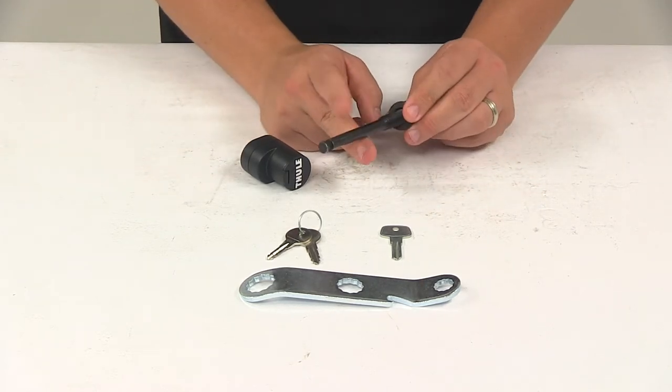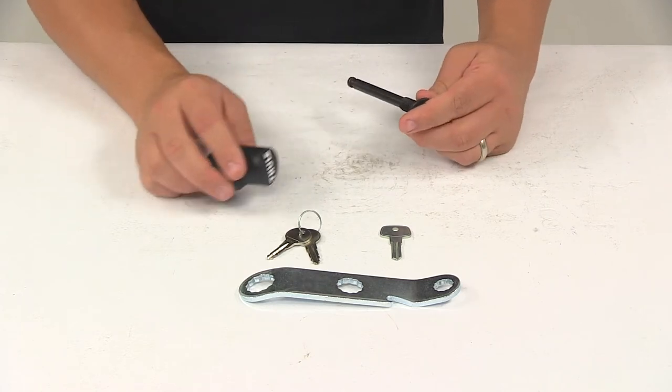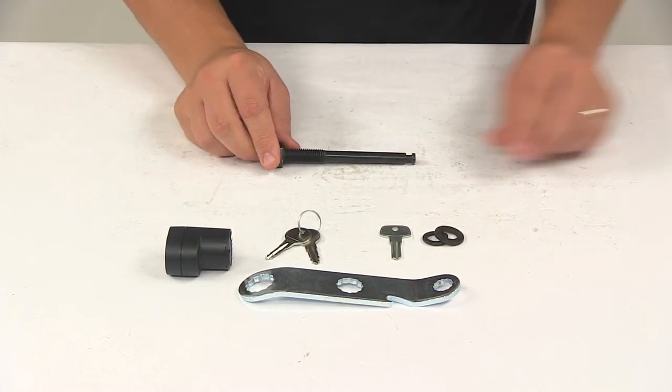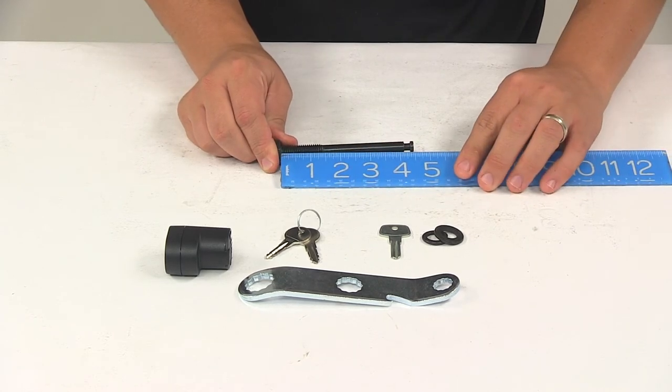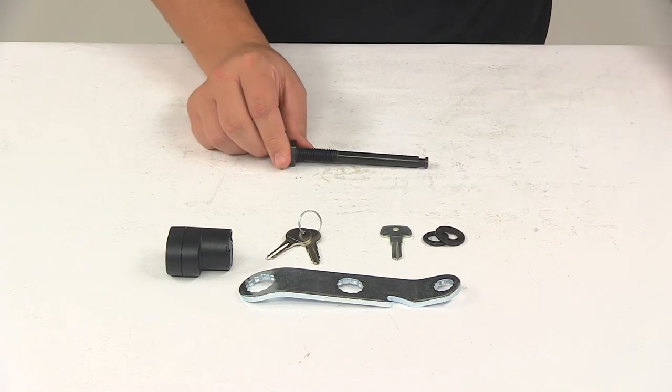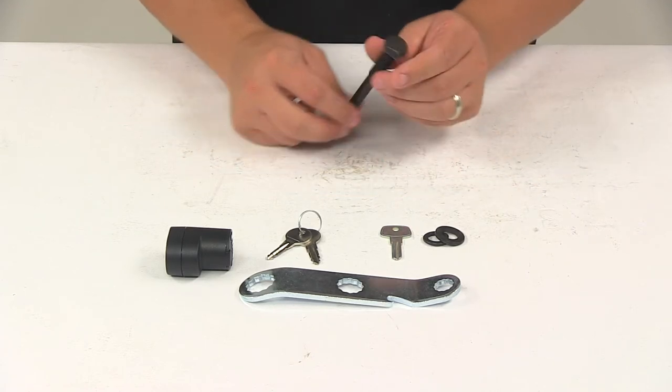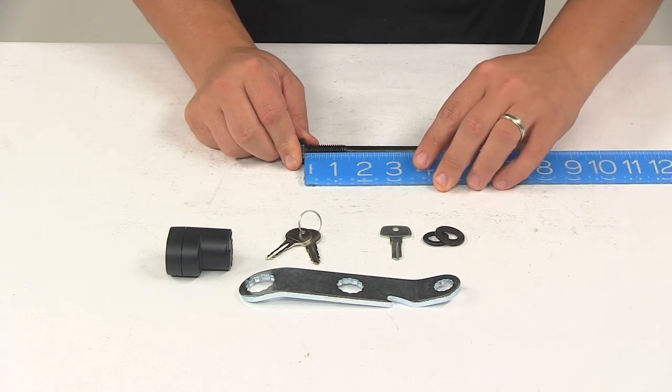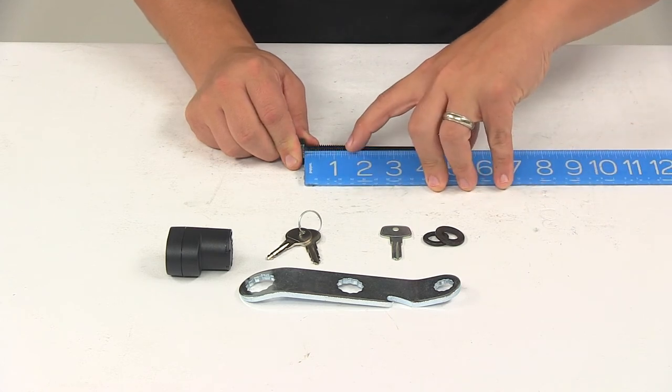The pin diameter is half an inch. A few measurements to go over with you real quick. The pin length from the bottom of the bolt head to the end of the pin is about four and a half inches. The threaded area measures about one and three eighths of an inch long.